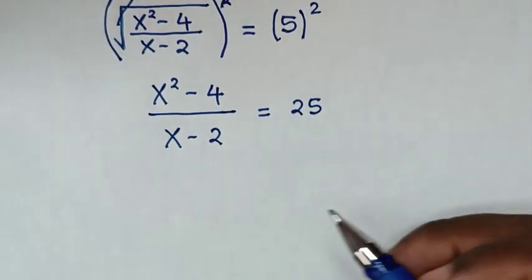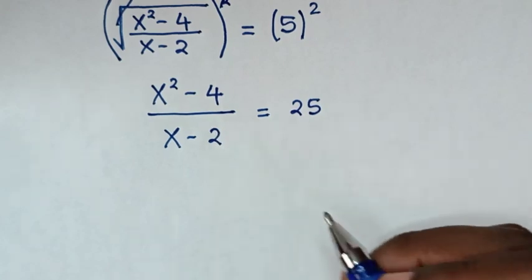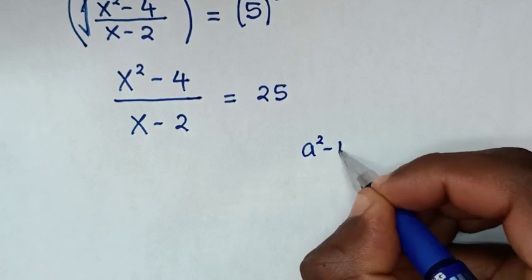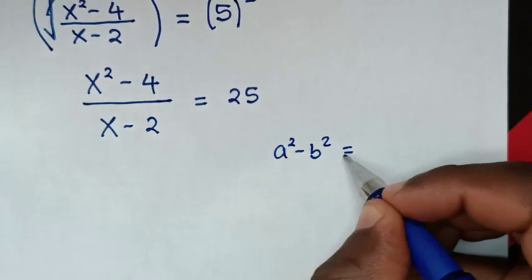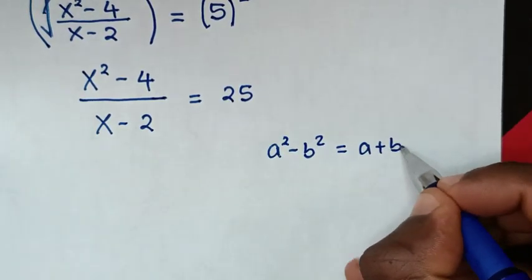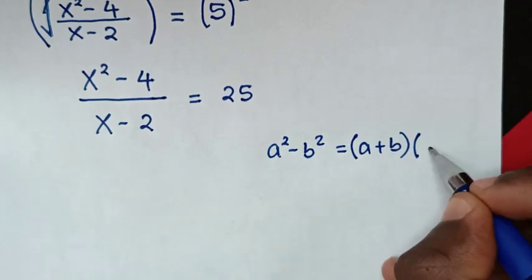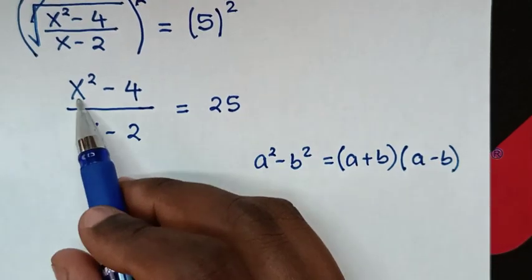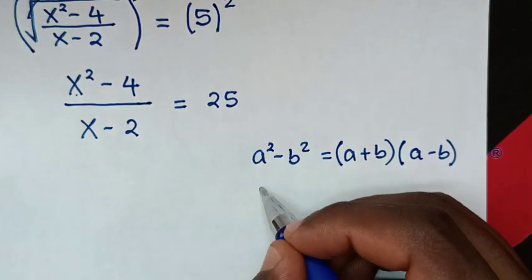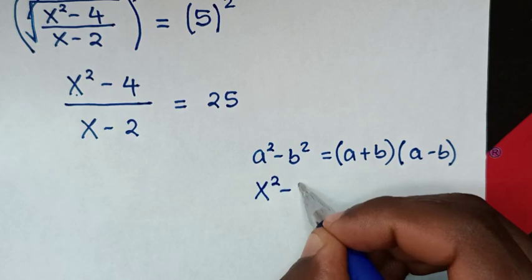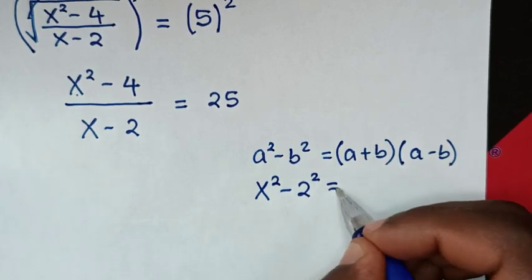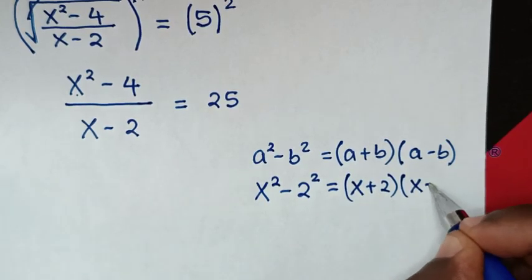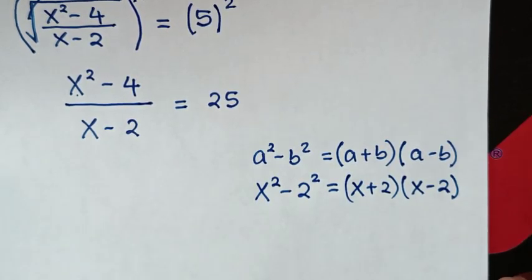Then the next step, from here x square minus 4 is in the form of a perfect square which is a square minus b square is equal to a plus b bracket a minus b bracket. So from here x square minus 4 is same as x square minus 2 square which is equal to x plus 2 bracket x minus 2 bracket.